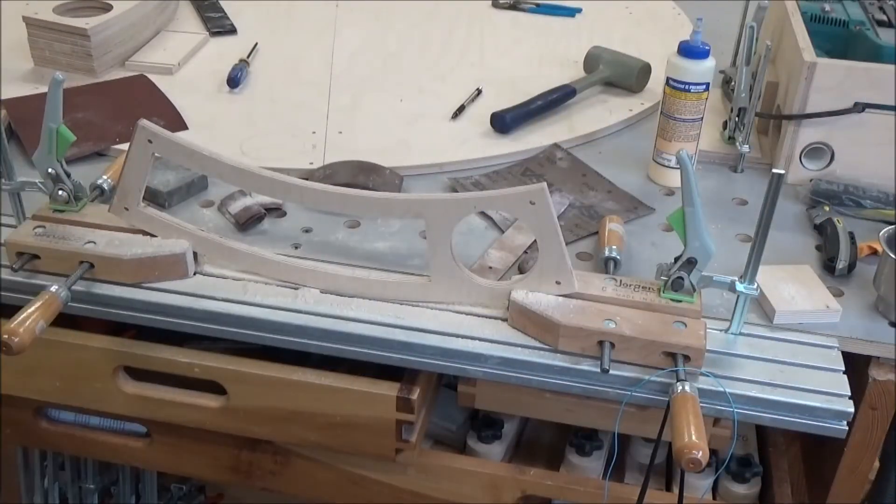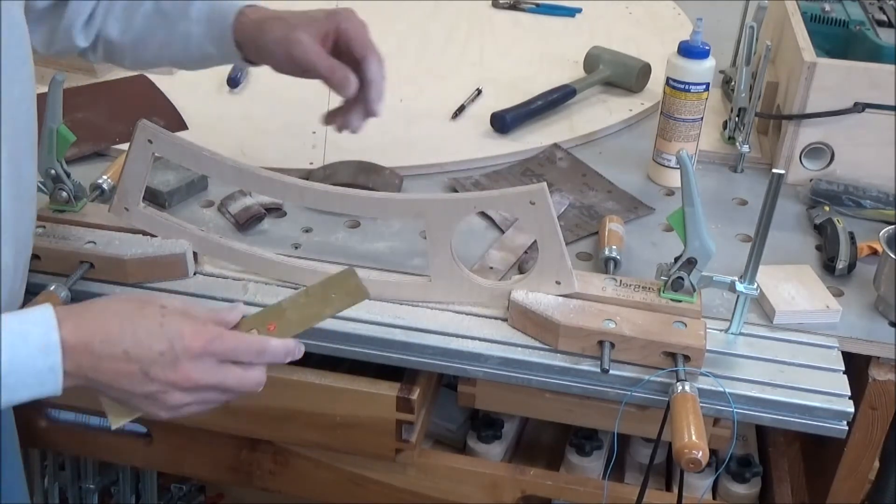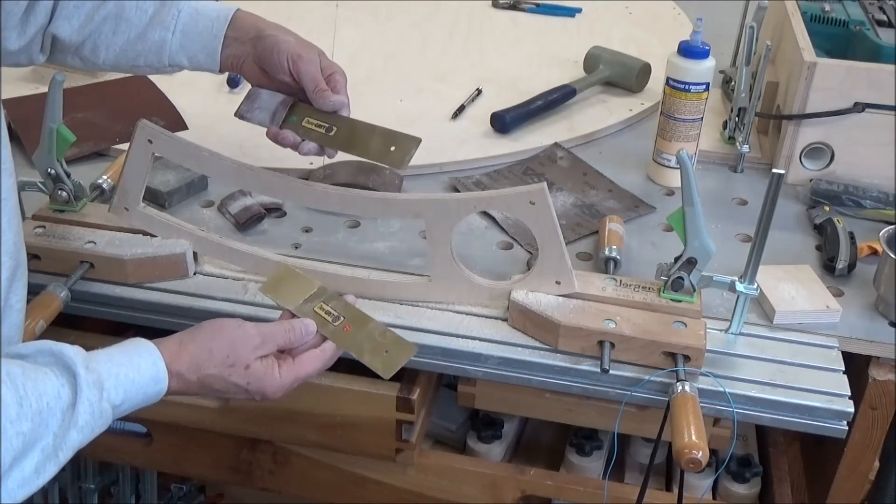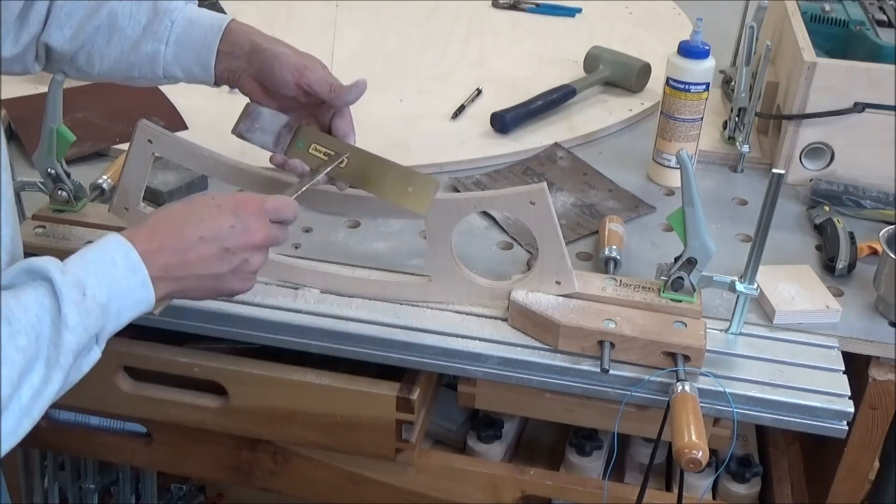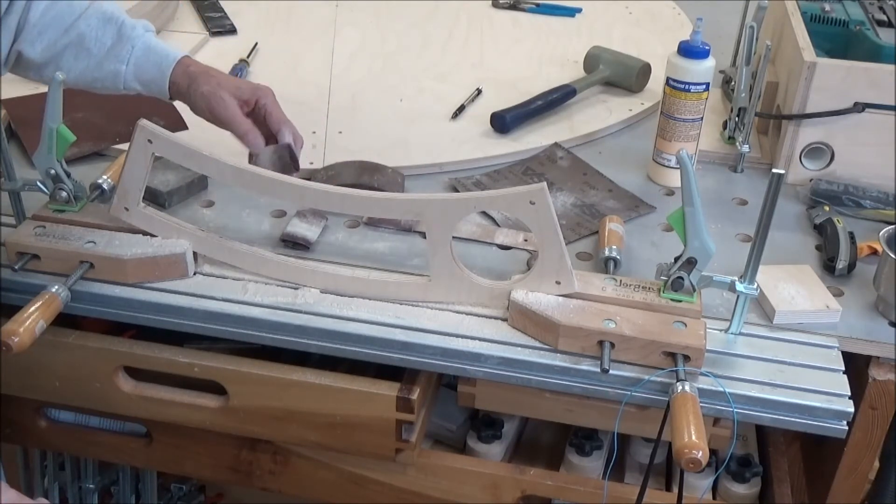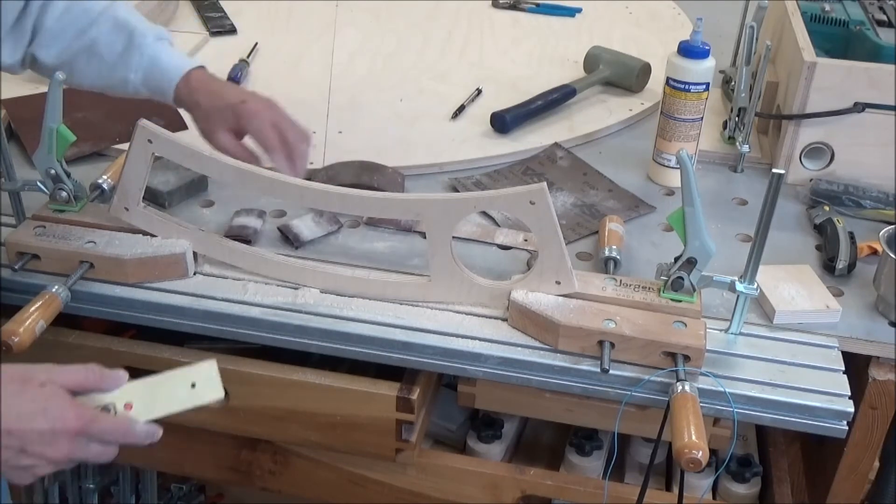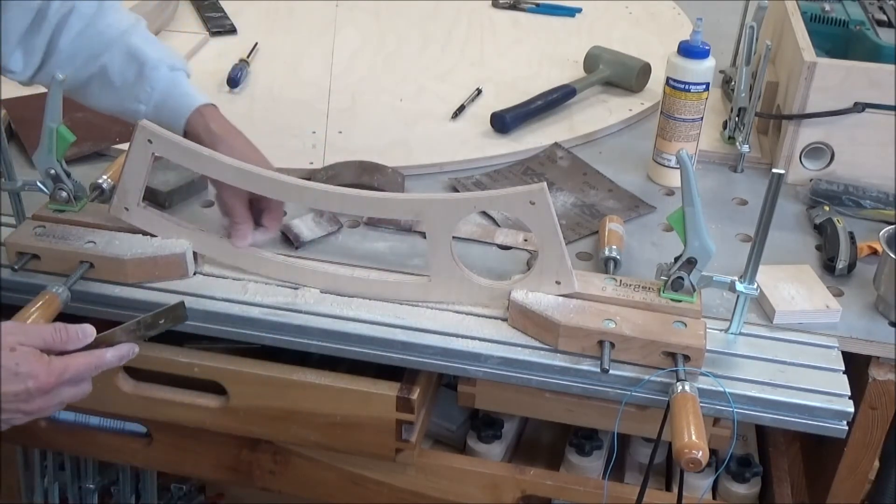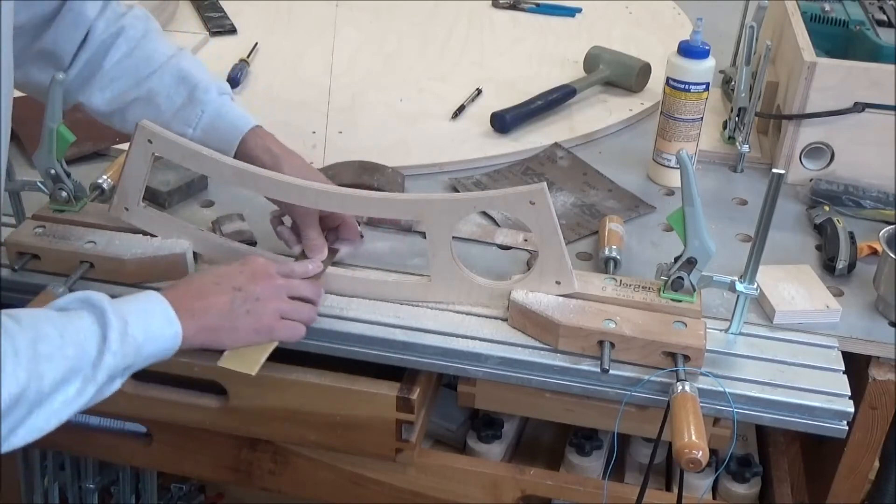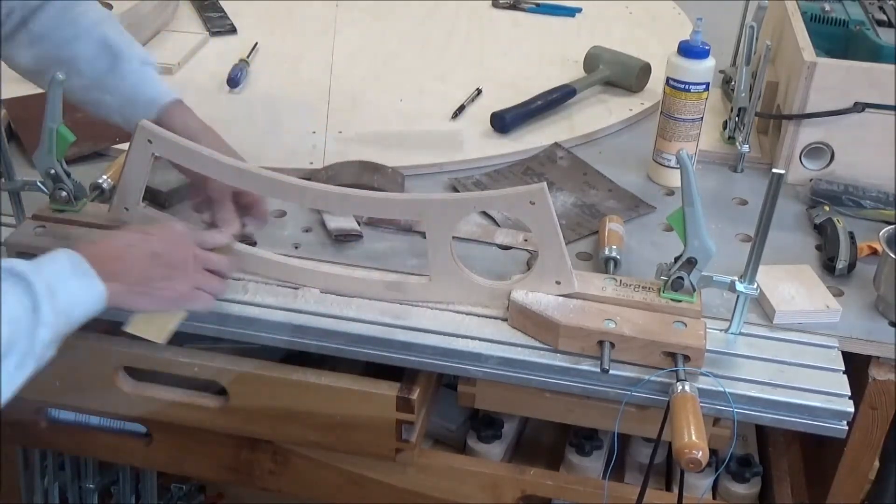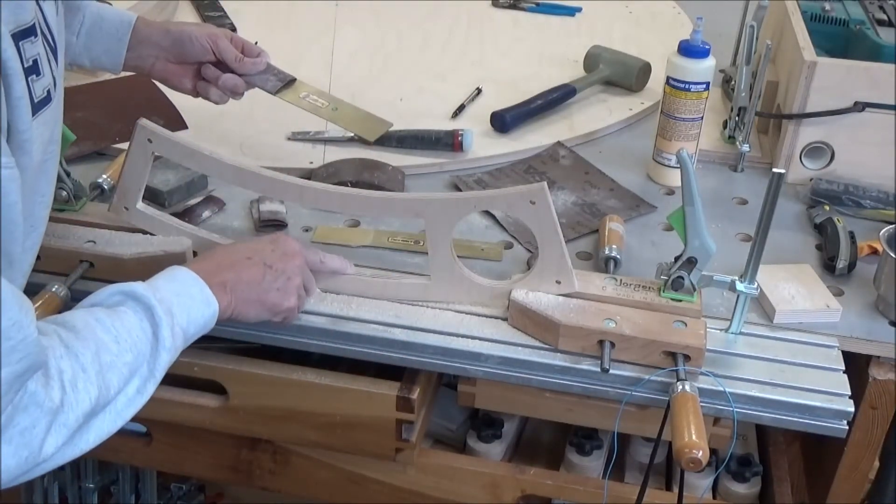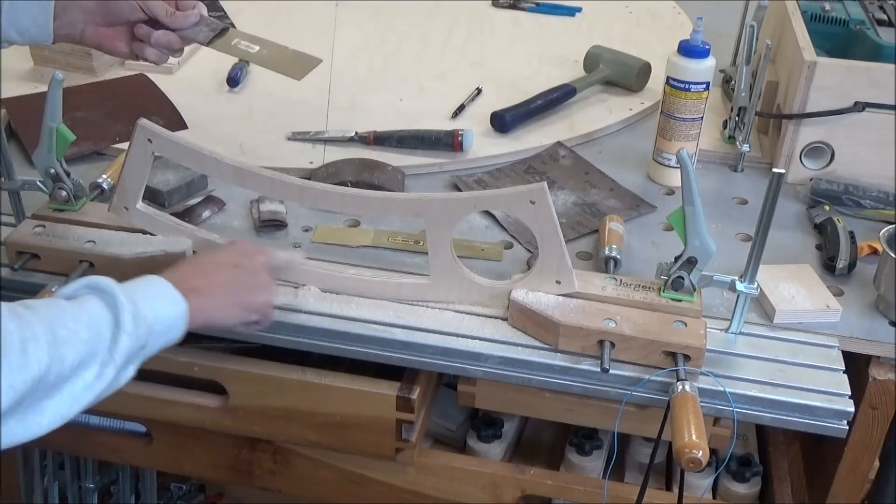So this is the last one. I'm using a combination of these duo-grit sanding sticks. This is 60 grit and 120 grit. Then I go to sandpaper, 80, 100, and 120. This is probably the roughest one of them all here. I got some pretty good dips right here, but this works pretty well. You can still see a little bit of a shadow there, but I'm not going to worry about it.